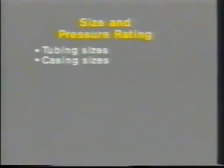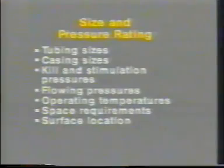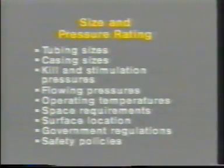Wellheads typically are the joint responsibility of the drilling department, which installs the casing head and casing spools during the drilling operation, and the production department, which may install the tubing head and surface flow control equipment, also called the Christmas tree or simply the tree. This equipment is designated by its size and pressure rating, which are dictated by design considerations such as tubing sizes, casing sizes, kill and stimulation pressures, flowing pressures, operating temperatures, space requirements and surface location, and government regulations or company safety policies.